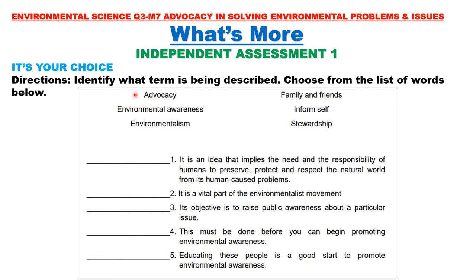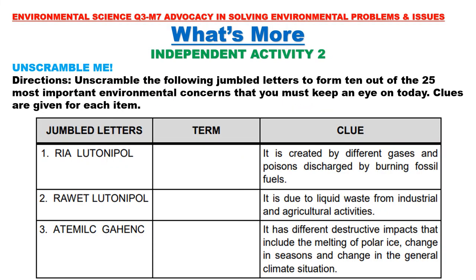Number 1: It is an idea that implies the need and the responsibility of humans to preserve, protect, and respect the natural world from its human-caused problems. Number 2: It is a vital part of the environmentalist movement. Number 3: Its objective is to raise public awareness about a particular issue. Number 4: This must be done before you can begin promoting environmental awareness. Number 5: Educating these people is a good start to promote environmental awareness.